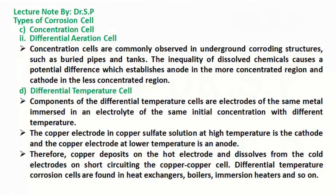Differential Temperature Cell. The components of differential temperature cells are electrodes of the same metal immersed in an electrolyte of the same initial concentration but at different temperatures. The copper electrode in copper sulfate solution at high temperature is the cathode, and the copper electrode at lower temperature is the anode. Therefore, copper deposits on the hot electrode and dissolves from the cold electrode on short-circuiting the copper-copper cell.